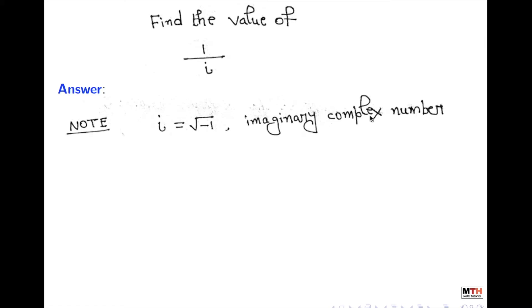Recall that i is an imaginary complex number and its value is square root of -1. We have learned this in our previous video. As i equals square root of -1, taking the square